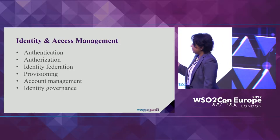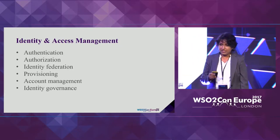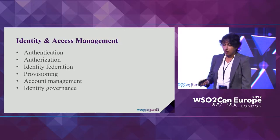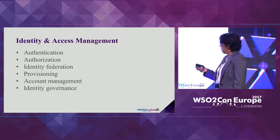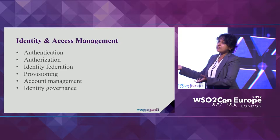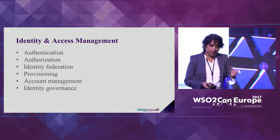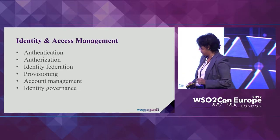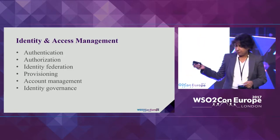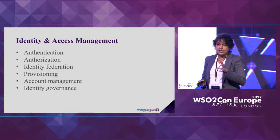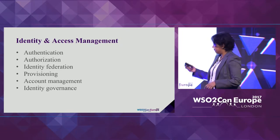There are several main branches in identity and access management: authentication, authorization, and identity federation — which covers single sign-on, single logout, and attribute federation among different systems. Provisioning means you can provision accounts into the IDP and into external systems. Next comes account management — user, role, and group management. And identity governance ensures the system is compliant with existing regulations and legislation.